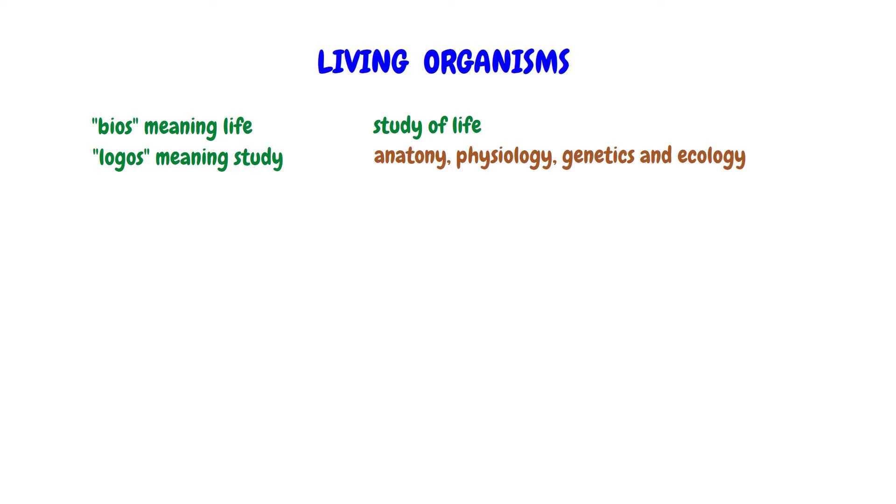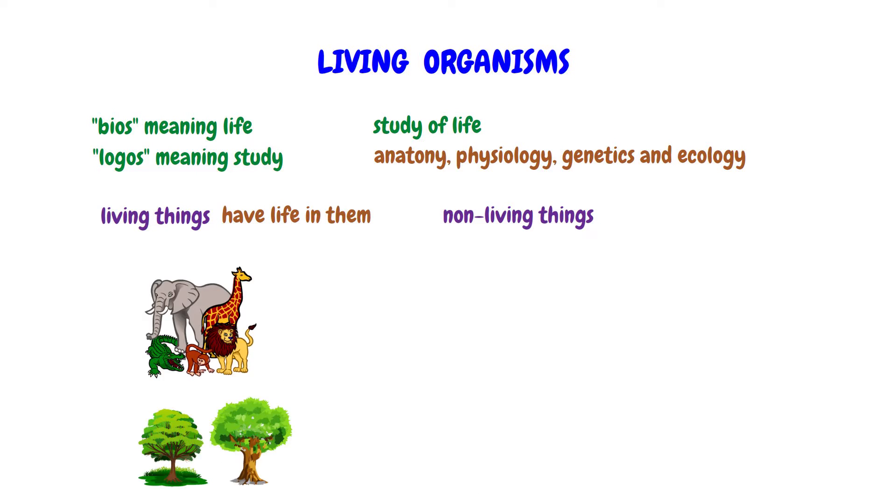Let's start by categorizing things in the biological realm. There are two main classes: living things and non-living things. Living things, as the name suggests, are things that have life in them. This includes all animals and plants.